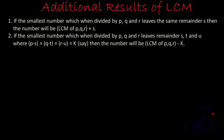In this video we are going to discuss a few additional results of LCM. The first result is: if the smallest number, which when divided by P, Q and R, leaves the same remainder S, then that number will be LCM of P, Q, R plus S.